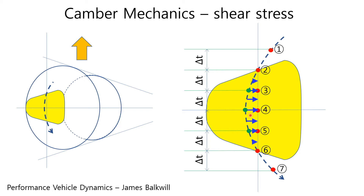Therefore, stress distributions, shown as blue arrows, are produced all over the tire contact patch. The resultant force, summing up all the stress distributions, produces the lateral force due to camber — that is the camber thrust.